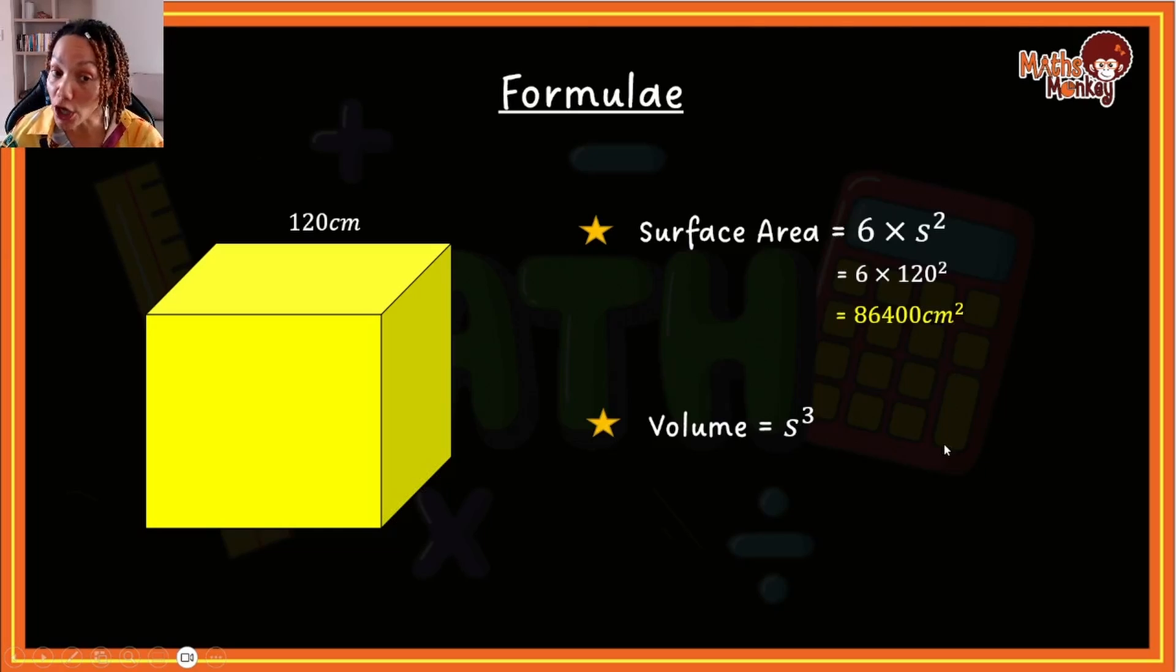Now, if you were to calculate the volume of this cube, it will look as follows. You'd say 120 to the power of three, and that will give us 1,728,000 centimeters cubed. Again, because this is volume, we use units cubed. So this answer is essentially the area of all the surfaces added together. And this answer is essentially all the space that is taken up within this cube. Okay.